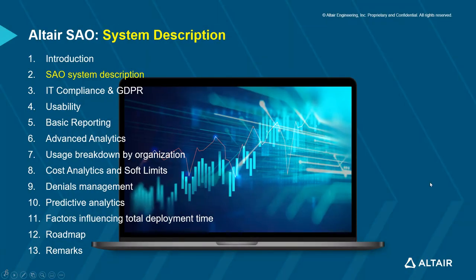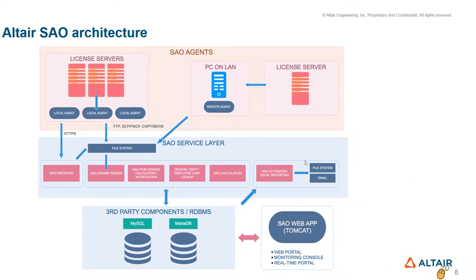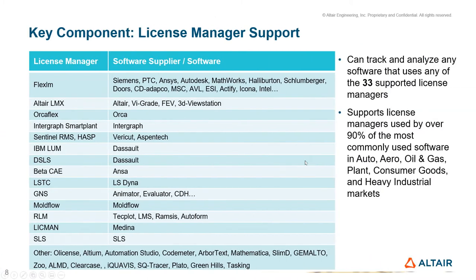SAO is built using a standard three-tier architecture. Data collection, parsing, and database updates run 24-7. Apache Tomcat hosts various SAO portals. Data collection agents can be installed on license servers or remotely. SAO supports 33 different license management systems today, with new license manager support added by customer requests.